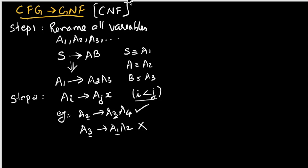If the condition i less than j is not satisfied, that means i is greater than j, we have to perform substitutions to fix those production rules.